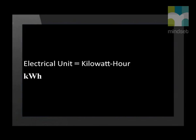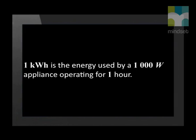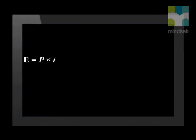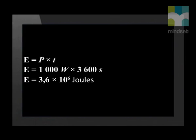Electrical energy is sold in units called the kilowatt hour, abbreviated as kWh. One kilowatt hour is the energy used by a 1000-watt appliance operating for one hour. To understand how much energy this represents, let's convert this to joules. We know that energy equals power times time. Time is measured in seconds, so we take the power of 1000 watts and multiply it by 3600 seconds — the number of seconds in an hour — to get a value of 3.6 × 10⁶ joules.